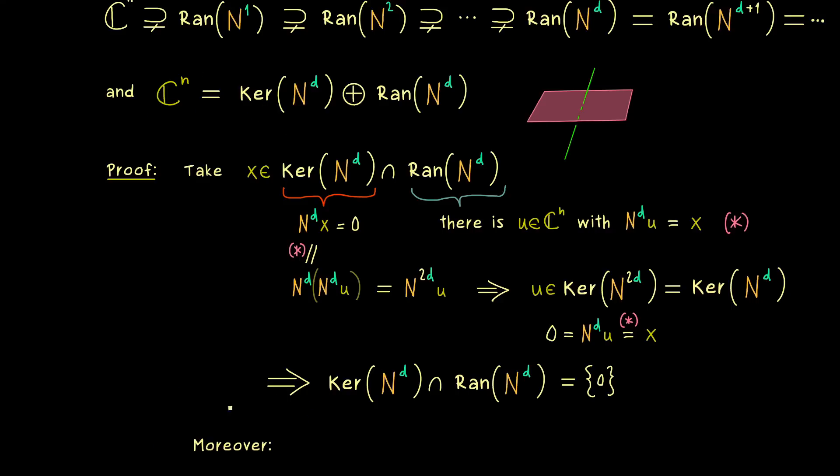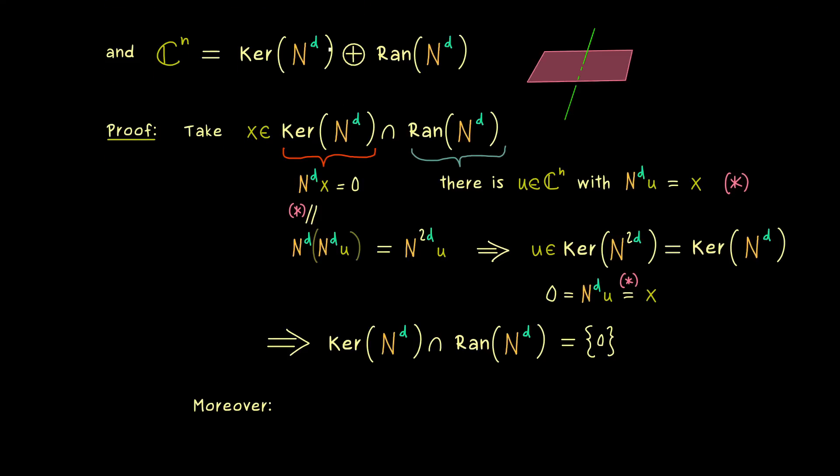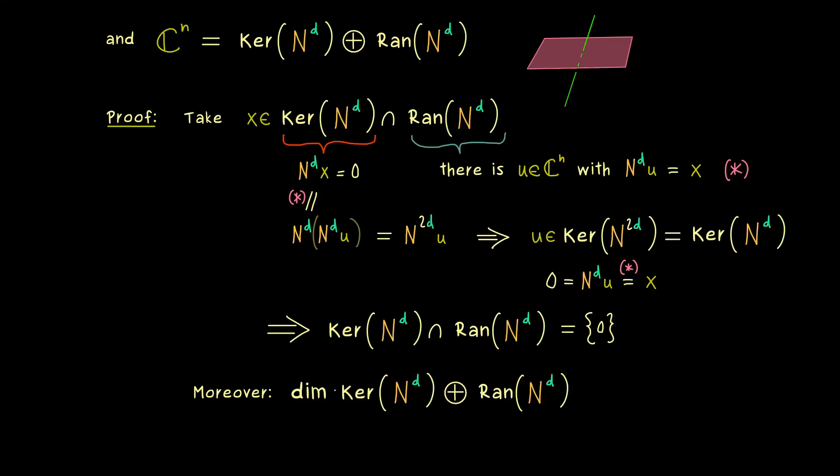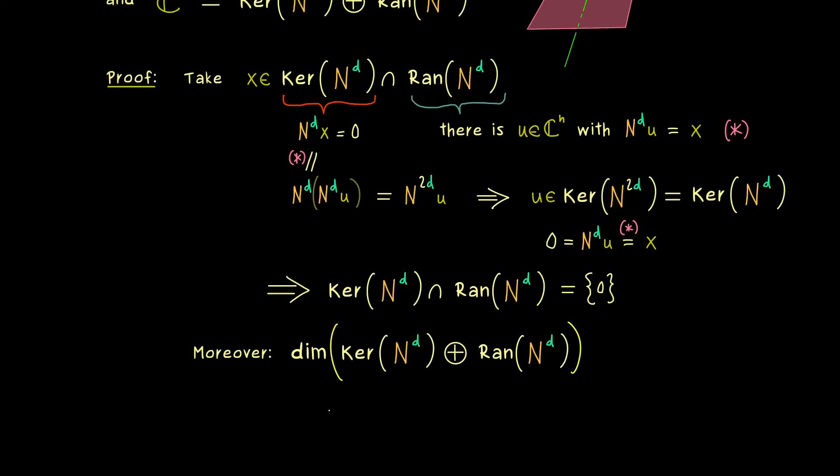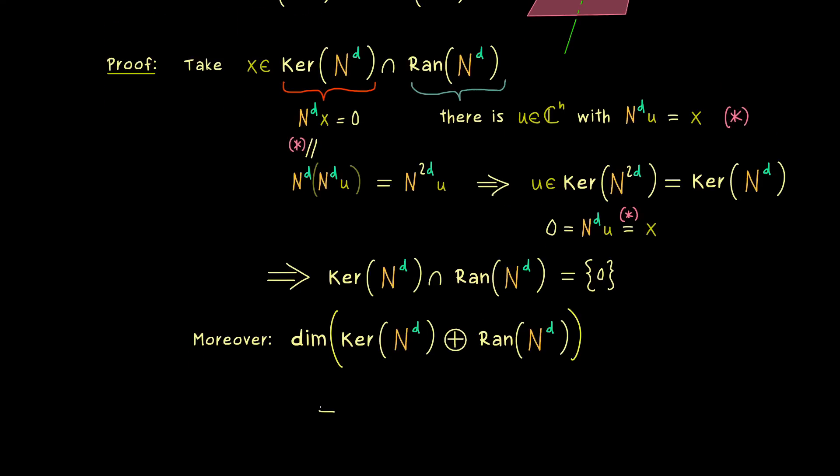And now the only thing that remains to show is that the direct sum is actually also equal to C^n. However, this is something we can immediately show by considering the dimensions of the spaces.